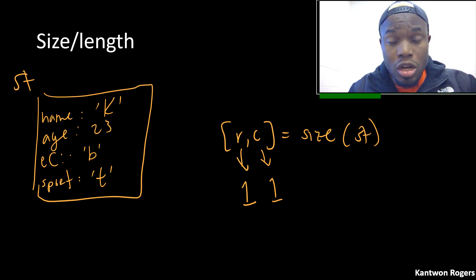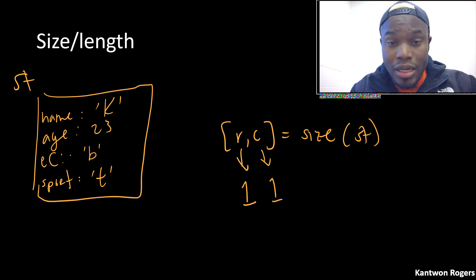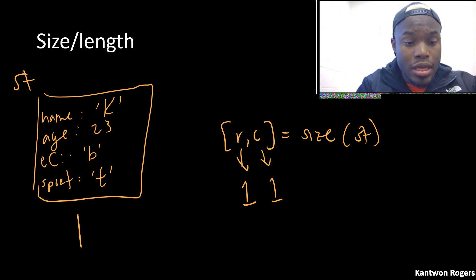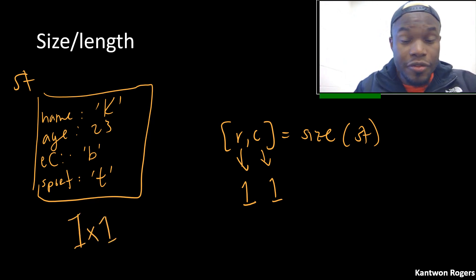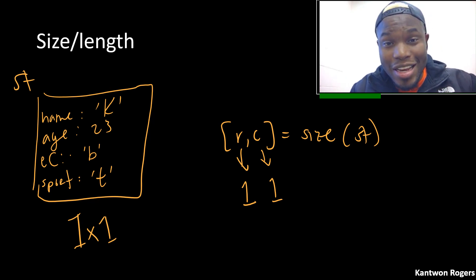When we talk about structure arrays, you'll start to see that I can have multiple of these boxes stacked on top of each other or next to each other — that's how I create rows and columns. But alone, this is just a one by one structure. There are four field names, but that does not have anything to do with the number of rows.